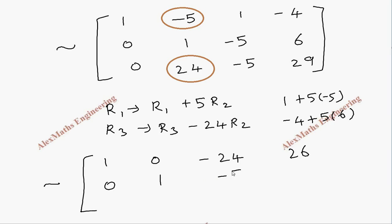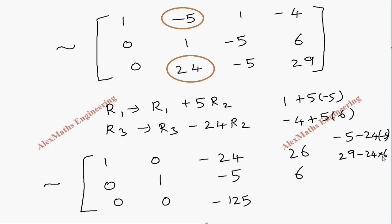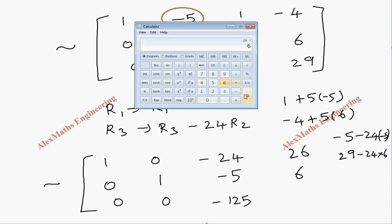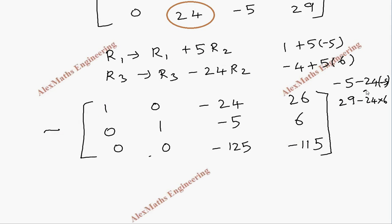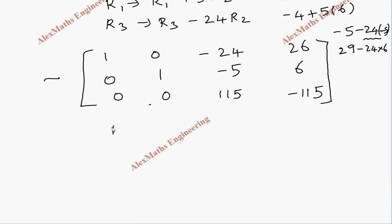Row 2 is written as it is: [0, 1, -5 | 6]. For row 3, applying R3 = R3 - 24×R2 gives the x3 entry as -5 - 24×(-5) = -5 + 120 = 115, and the constant as 29 - 24×6 = 29 - 144 = -115. So row 3 becomes [0, 0, 115 | -115].